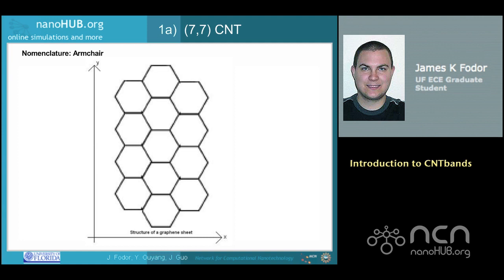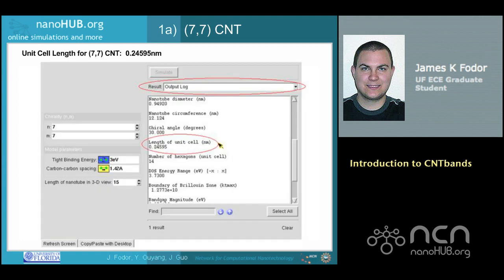To understand why CNTs with M equal to N are called armchair CNTs, let's examine the honeycomb-like structure of a graphene sheet from which CNTs are created. The circumference of the nanotube that will result from rolling the graphene sheet is denoted by C and determines the designation of the nanotube. If the vector C is in the x-direction, as shown, then the ends of the nanotube will have a structure that resembles an armchair. To find the length of a unit cell using CNT bands, select output log from the results drop-down menu and scroll down until you see the entry for length of unit cell.